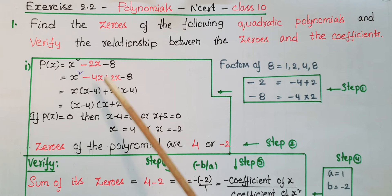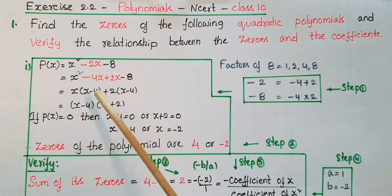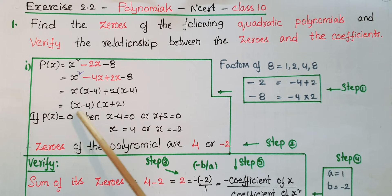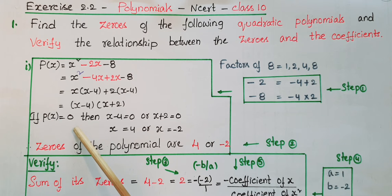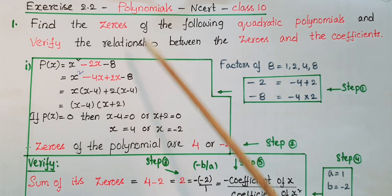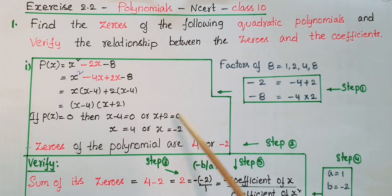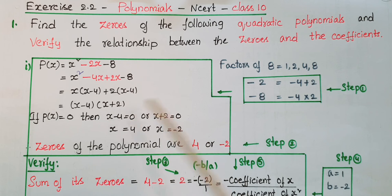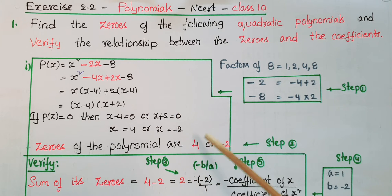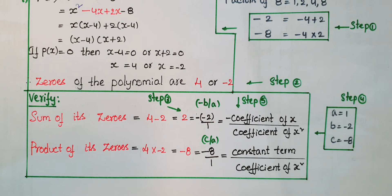So p(x) = (x - 4)(x + 2). Setting p(x) = 0: x - 4 = 0 or x + 2 = 0, giving x = 4 or x = -2. Therefore the zeros of the polynomial are 4 and -2.